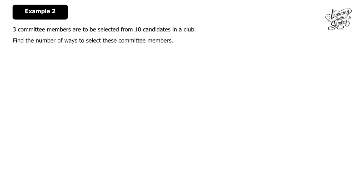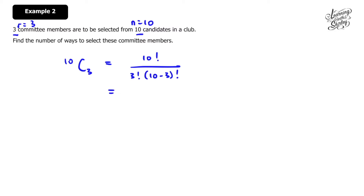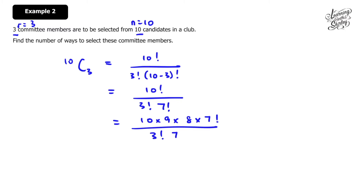Example 2: Three committee members are to be selected from 10 candidates in the club. Find the number of ways to select these committee members. Here n equals 10 and r equals 3, so we use 10C3. That equals 10 factorial over 3 factorial times 7 factorial, which simplifies to 10 times 9 times 8 over 3 factorial. Using a calculator, the answer is 120 ways.